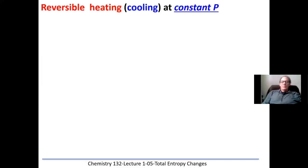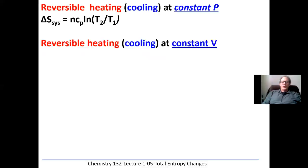Let's look at reversible heating or cooling at constant pressure. The delta S of a system equals nC_P ln(T2/T1). That's because in a reversible system, the changes are happening very, very slowly, and we can integrate to find the entropy. For reversible heating or cooling at constant volume, the only thing that changes is that C_P becomes C_V.